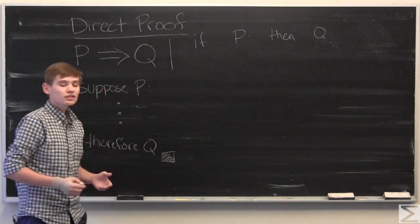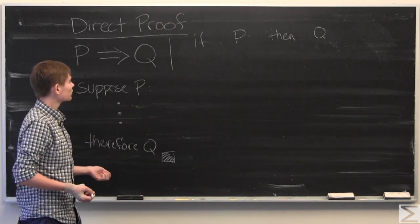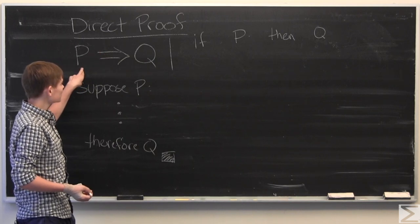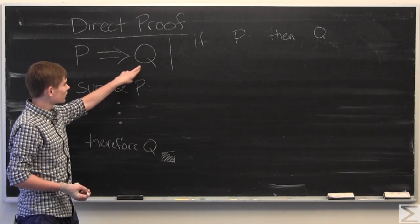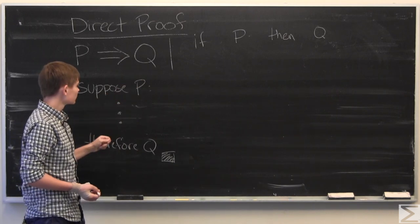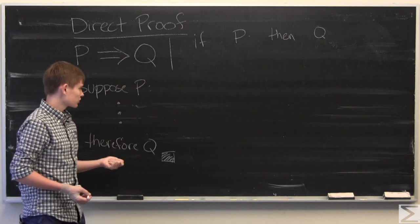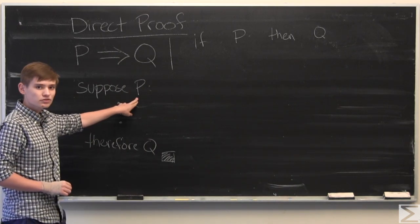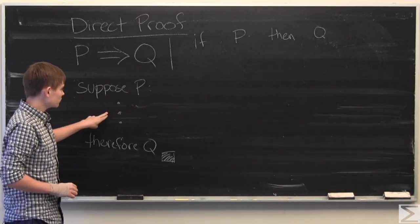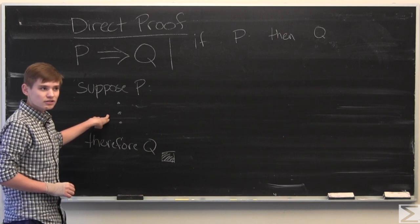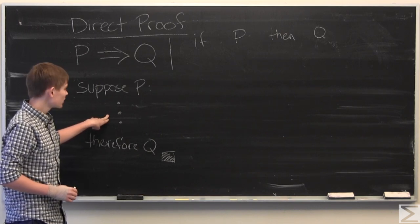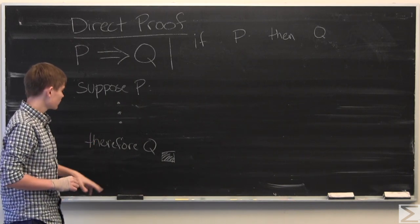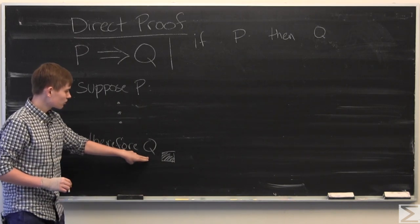So in the simplest way, the most basic mathematical proof is the direct proof where you start with a statement P and show that a statement Q will naturally follow. The basic structure of a direct proof is to suppose that P is true and then use logic and axioms and definitions and already proven mathematical facts to show that Q is true.